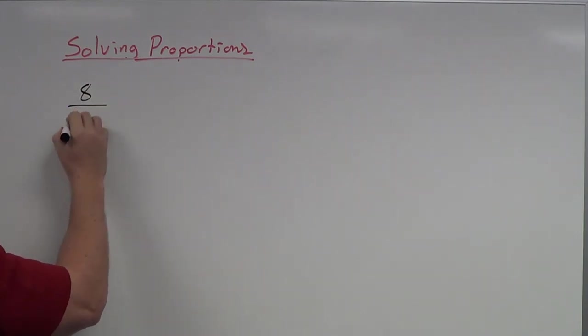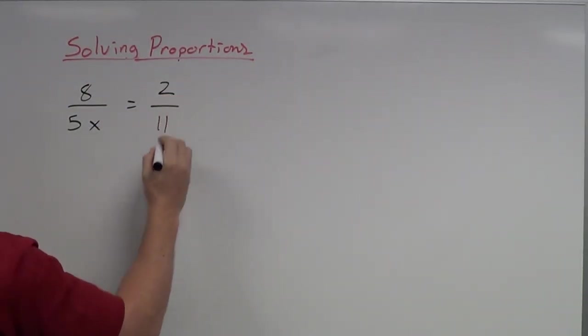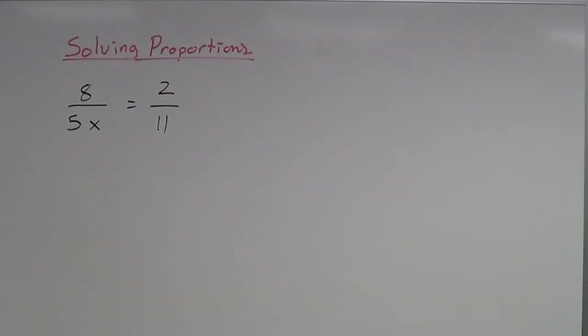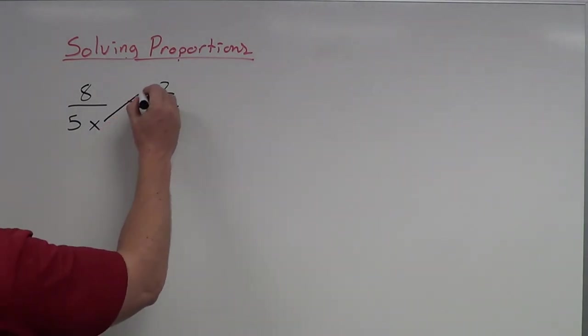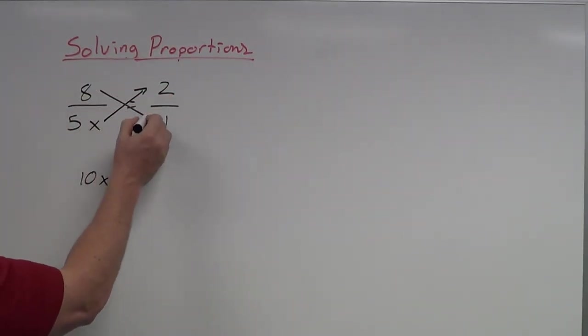8 over 5x is equal to 2 over 11. So here's another one. This time the variable is on the bottom. And it really, again, doesn't make any difference when we solve these types of equations. When we solve proportions, we're still just going to use the cross product. So I'm going to take 5x times 2, and I'm going to take 8 times 11.